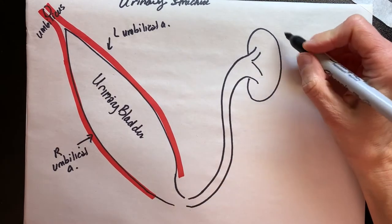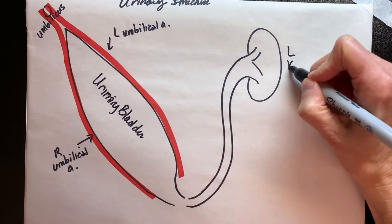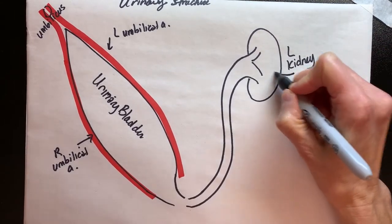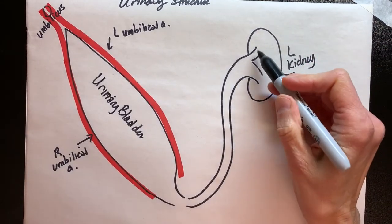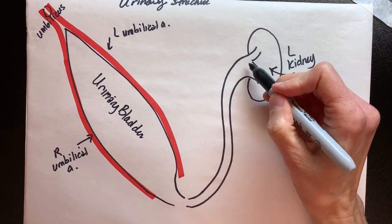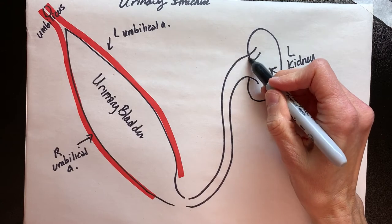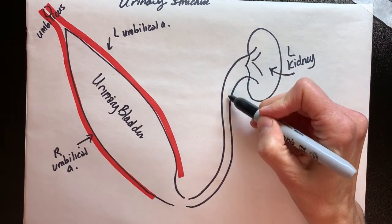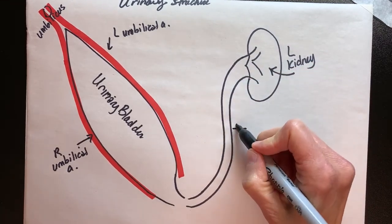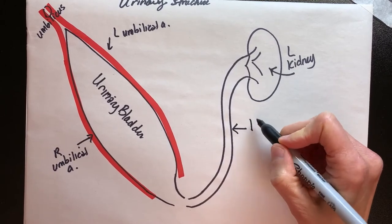Here's the left kidney, and as the ureter or the pelvis of the kidney exits through the hilum - this is the hilum here - and then exits into this tube, this tube is called the ureter.